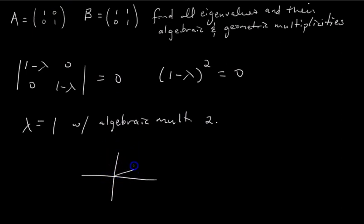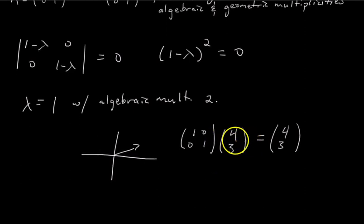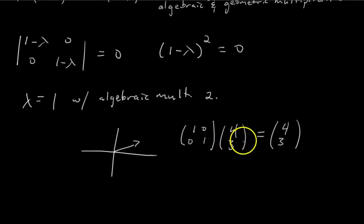So if you input some vector like this, say you input the vector 4, 3 for example. Well, what do you get as your output? You get the same vector, 4, 3. So this is an eigenvector with eigenvalue 1. It's clear to see by definition this is an eigenvector with eigenvalue 1. But it didn't matter what we inputted. Any input would get us an output which is just 1 times the input.